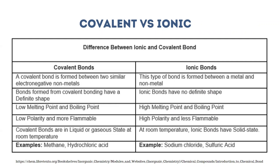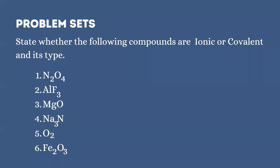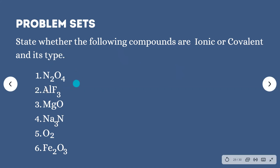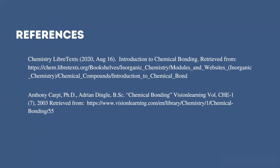Here are the following examples for covalent and ionic compounds. To be able to answer the following, you must recall the topics we have discussed. We have to identify whether each is ionic, covalent, or its specific type. These are the references for this learning module. Thank you so much for listening.